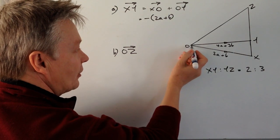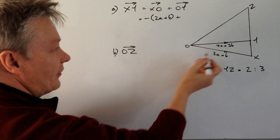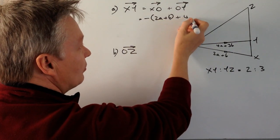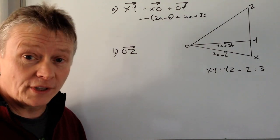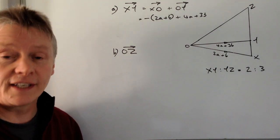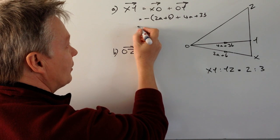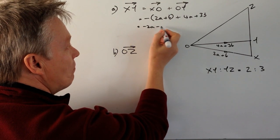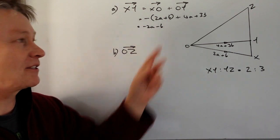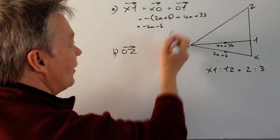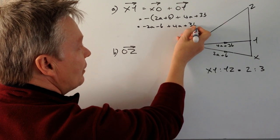We're now going from here to here, so we add 4a + 3b. Then it's just a case of removing the brackets and gathering up the like terms. Removing the brackets gives minus 2a minus b — be really careful about that because it trips people up quite a lot — and that's going to be plus 4a + 3b.